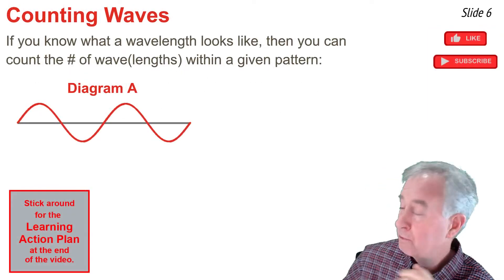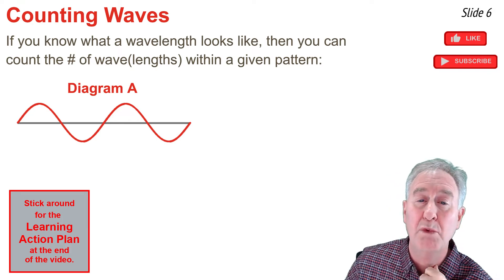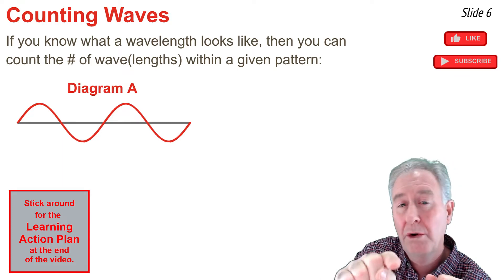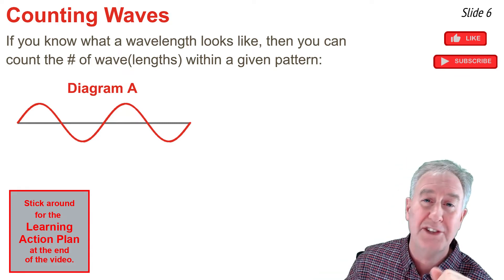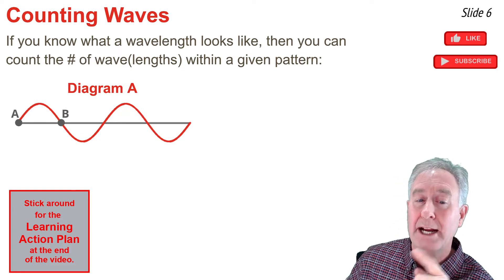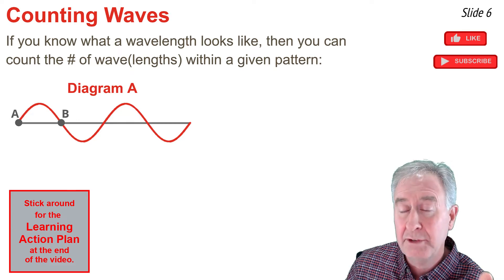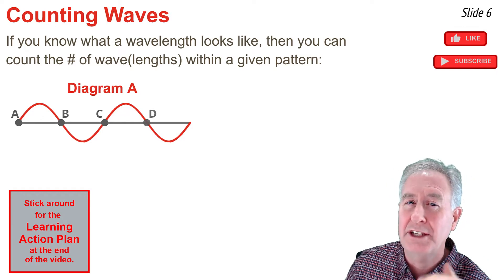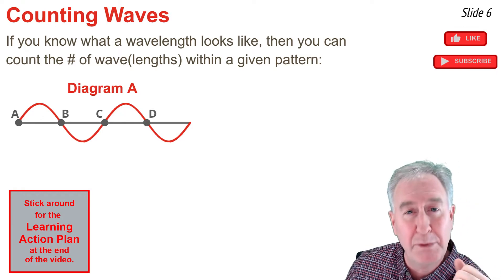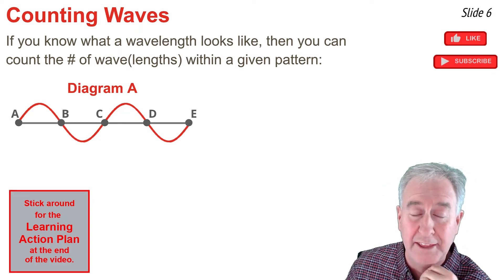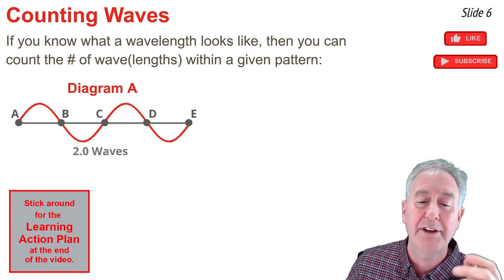Let's practice counting waves in diagram A by counting half-waves. Starting at point A, go up to the crest and back down to point B — that's half a wave. From B down to the trough and back up to rest — another half wave. From C to D is a third half-wavelength, and D to E is the fourth. Four times one-half equals two waves counted in diagram A.